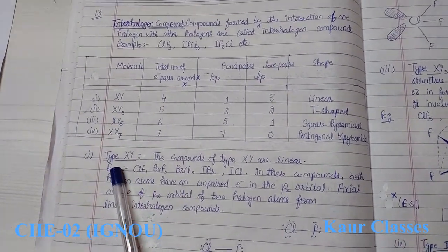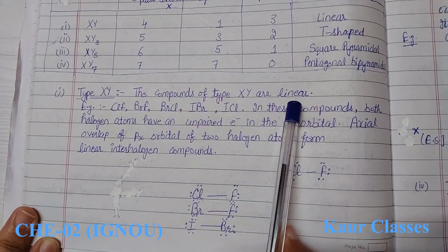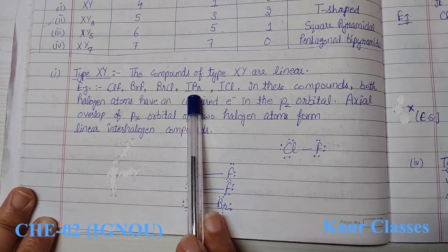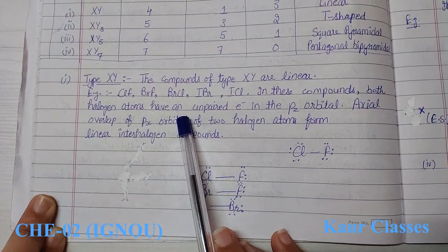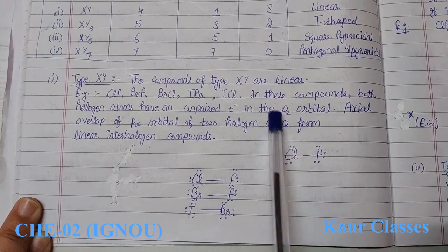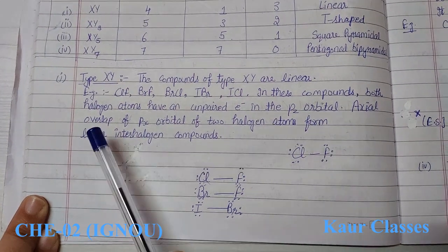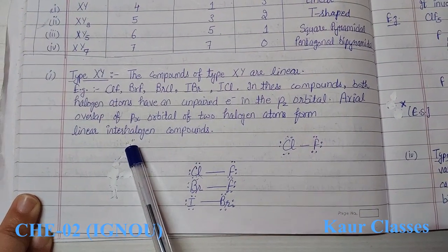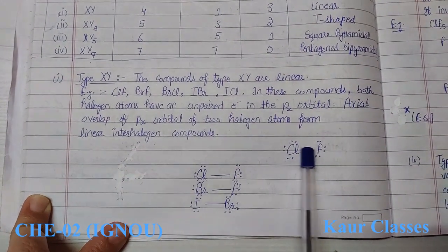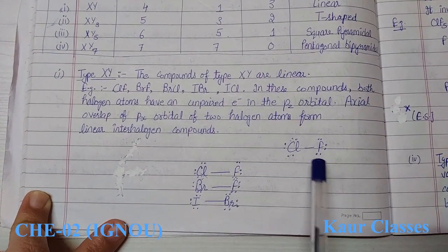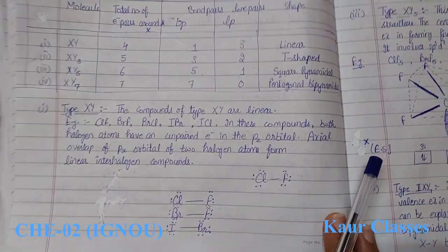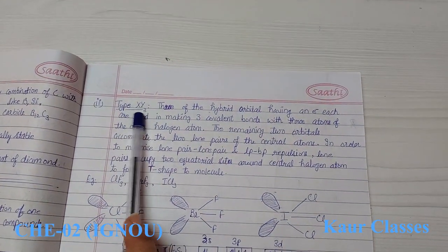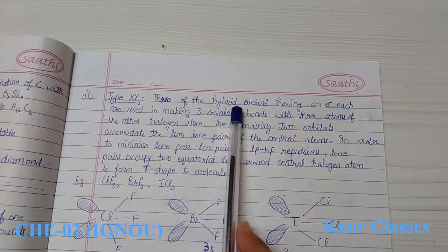The first type is XY. These compounds are linear. Examples include ClF, BrF, bromine chloride, iodine bromide, and iodine chloride. In these compounds, both halogen atoms have one unpaired electron in the pz orbital. Overlap of the px orbital of two halogen atoms forms a linear structure. For ClF, the structure has one bond pair and three lone pairs, giving a linear shape.